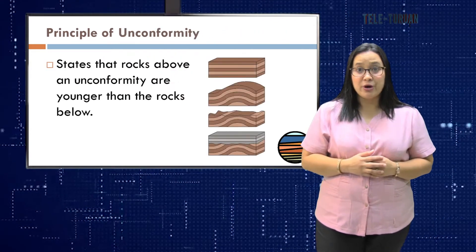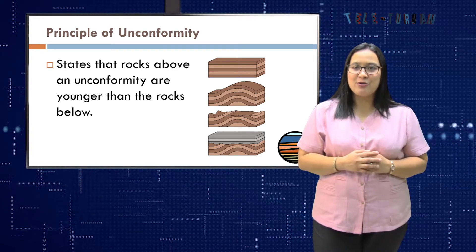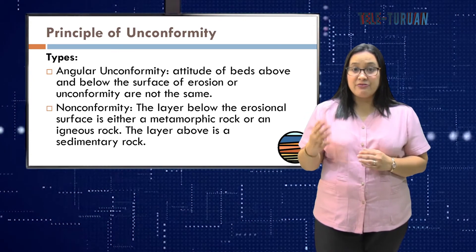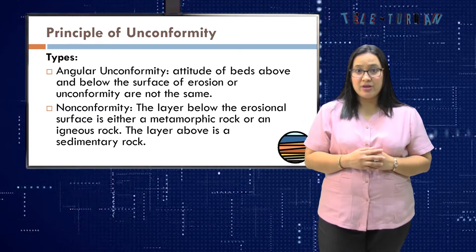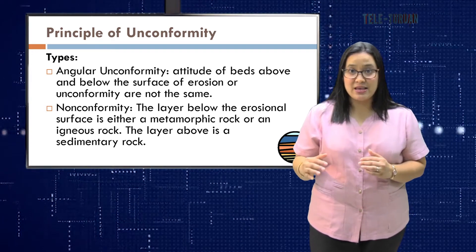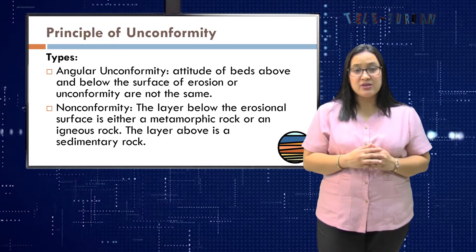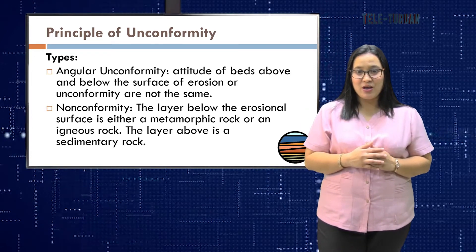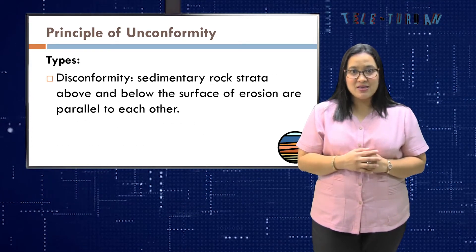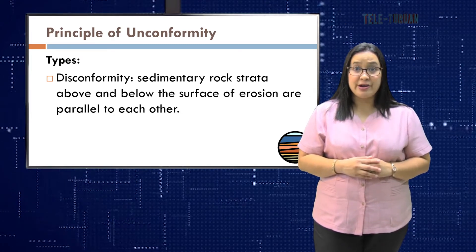The principle of unconformity states that rocks above an unconformity are younger than the rocks below. There are three different types of unconformity. The first is angular unconformity, where the attitude of beds above and below the surface of erosion are not the same. Next is non-conformity, where the layer below the erosional surface is either a metamorphic or igneous rock, and the layer above is a sedimentary rock. The third type is disconformity, where sedimentary rock strata above and below the surface of erosion are parallel to each other.